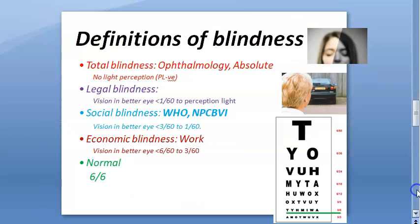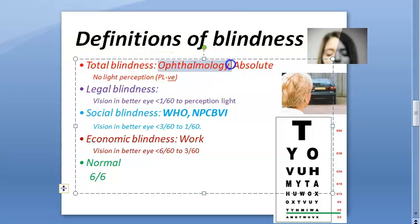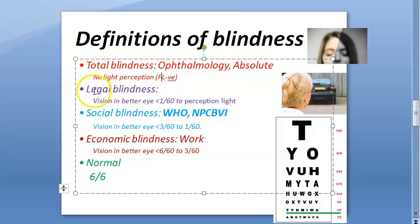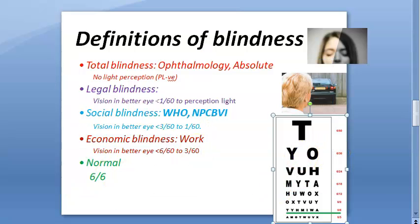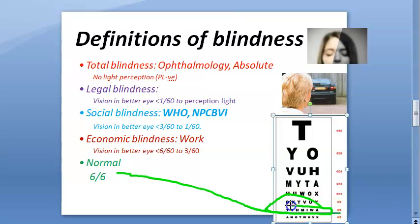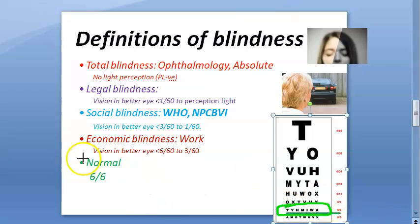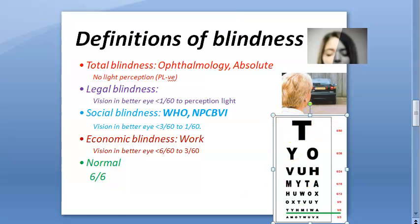There are other terminologies we should know. There is total blindness — the ophthalmologic or absolute blindness — where there is no perception of light at all; the person cannot differentiate whether they are in light or darkness. Then you have legal blindness, social blindness, economic blindness, and normal vision. Normal vision means you can read the 6 by 6 line from a distance of 6 meters — that is 20 by 20 or 6 by 6 vision.